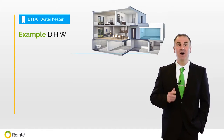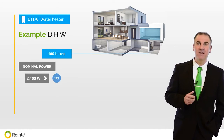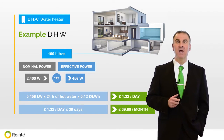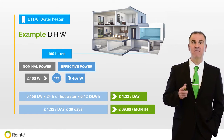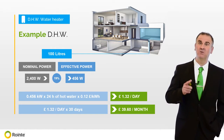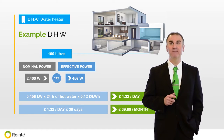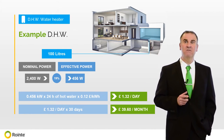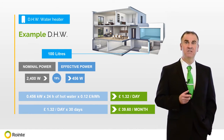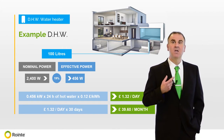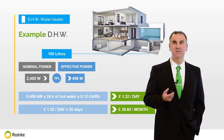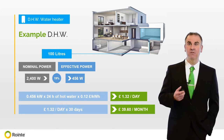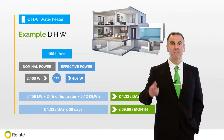To work out the running cost of a 100-litre Rowente unvented mains pressurised water cylinder, we take the nominal power being 2.4 kilowatts and multiply this by 19%, which is the effective power, giving us a total of 456 watts per hour. Over a running period of 24 hours, the water cylinder will use 456 watts by 24 hours, which is 10.94 kilowatts. Using 12 pence as the energy cost per kilowatt hour, the water cylinder will cost £1.32 per day. Over a 30-day month, it will cost £39.60.